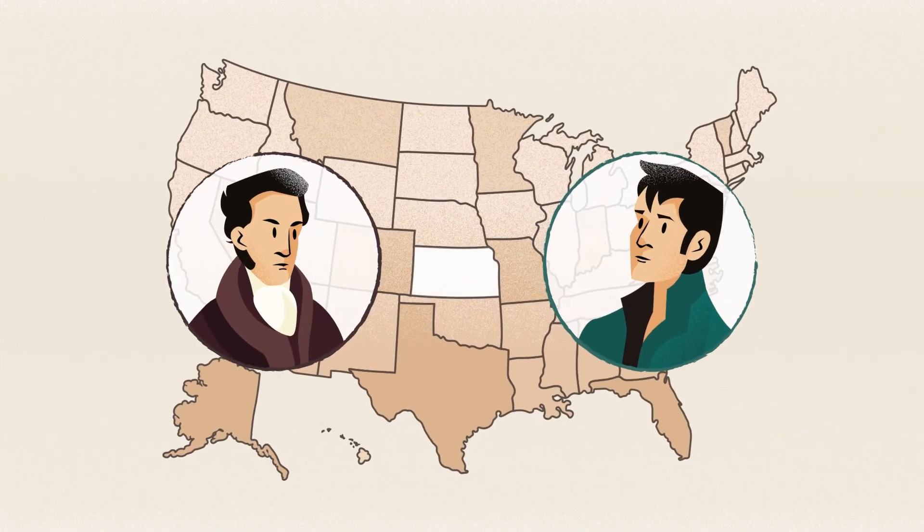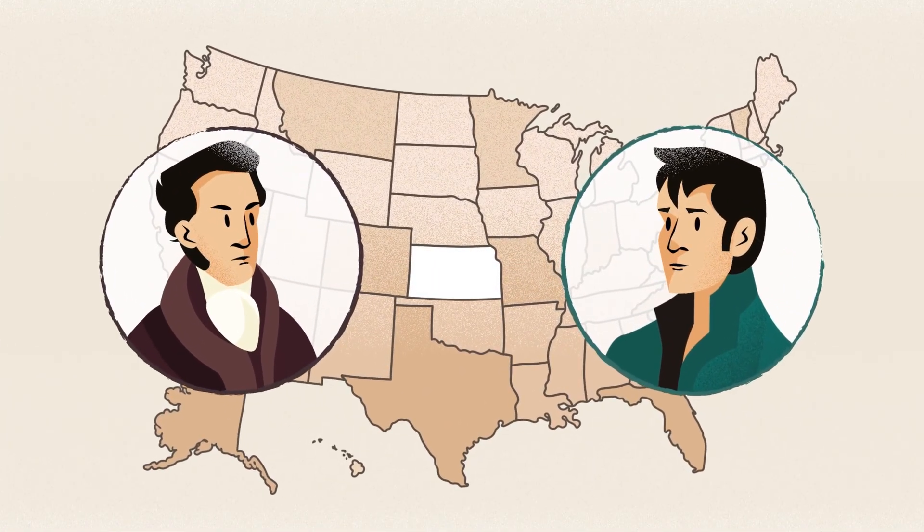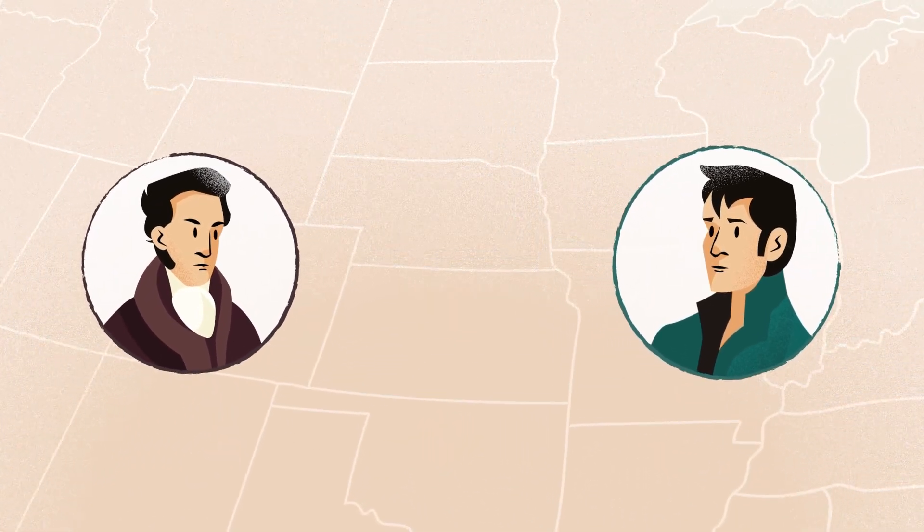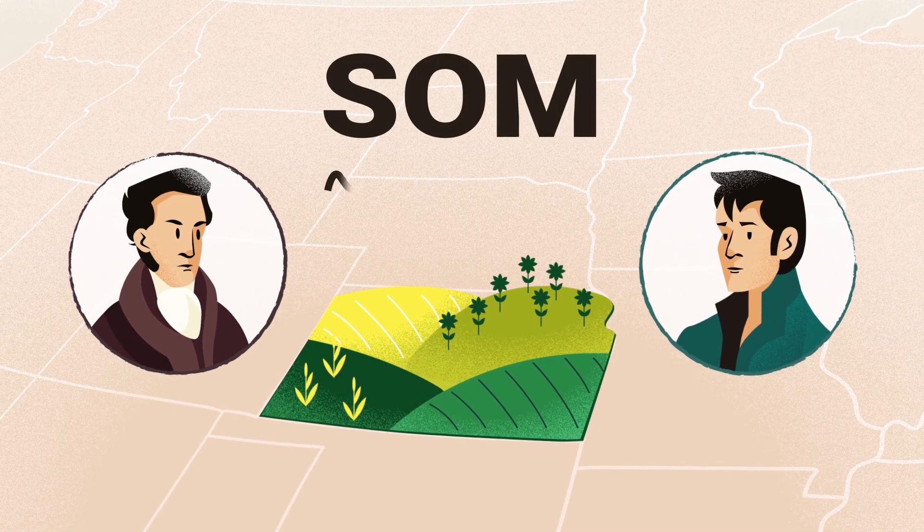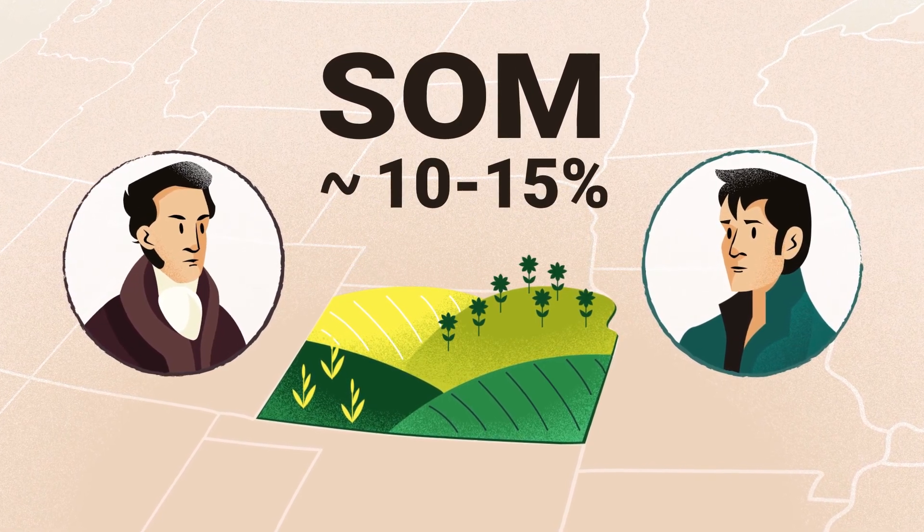When Lewis and Clark explored the Louisiana Purchase for potential agriculture opportunities, the grasslands of the central United States had an average soil organic matter of 10-15%.